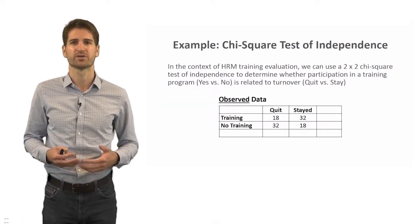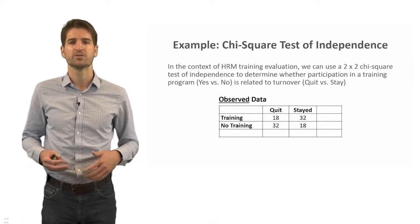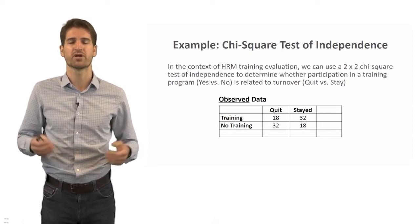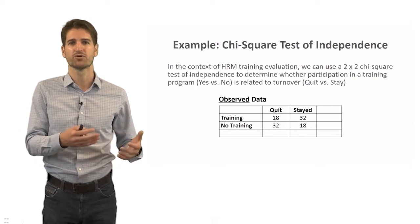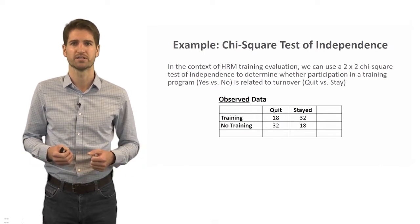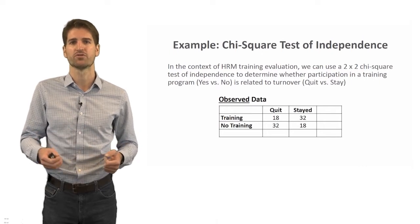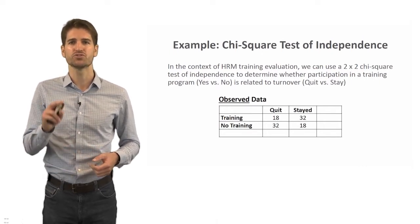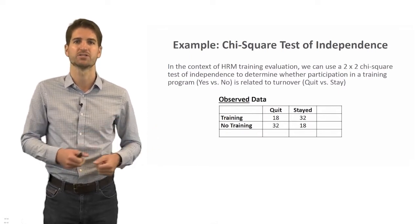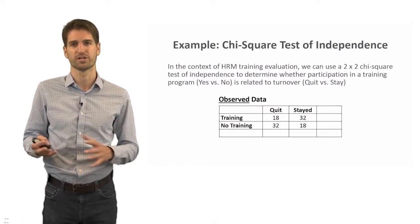Let's walk through an example in the context of HR management training evaluation. Suppose we have a training condition and a no-training condition — people coded in our HR information system as having attended training or not during a certain time period. We also have those who quit and those who stayed. So each variable has two levels: training versus no training, and quit versus stayed.